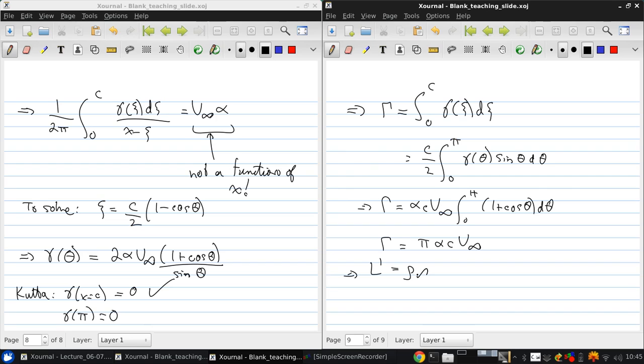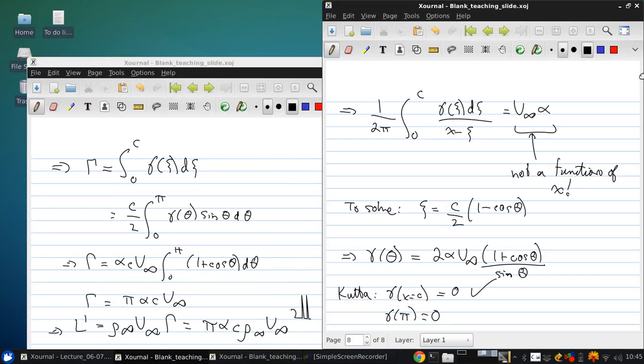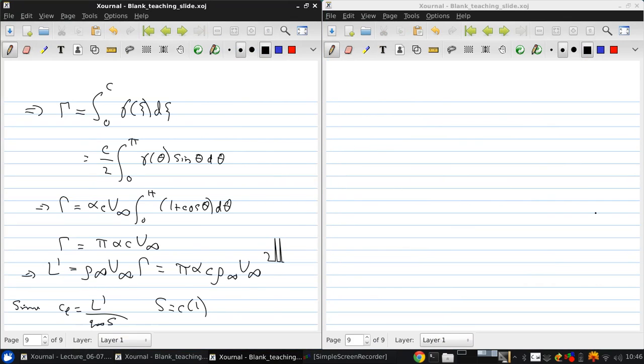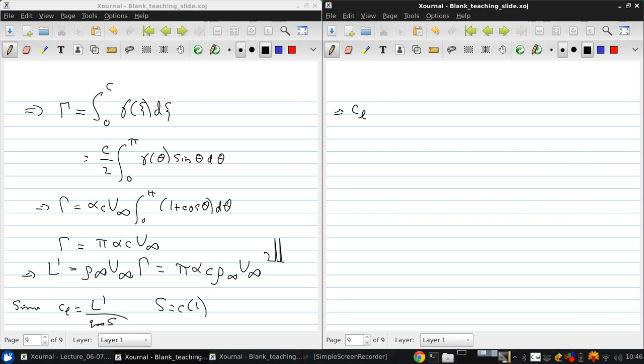So the lift per unit span is v infinity rho infinity gamma is pi alpha c rho infinity v infinity squared. Since the lift coefficient is the lift per unit span over the dynamic pressure times the planform area, which here is c times 1 because 1 is the depth into the page. Then c_L is pi alpha c rho infinity v infinity squared over one half rho infinity v infinity squared c times 1. And if we simplify, we get that c_L is 2 pi alpha.